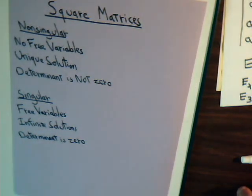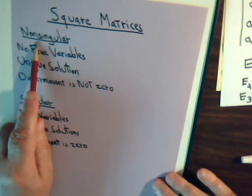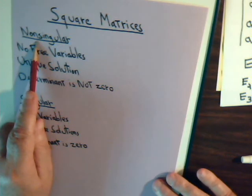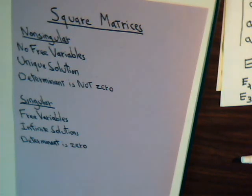That's all for this presentation. In the next two videos, we're going to look at more properties of non-singular matrices — specifically how they have an inverse and what you have to do to determine that inverse. Come back and join us for those videos, and very soon we'll start solving problems involving eigenvectors and eigenvalues.